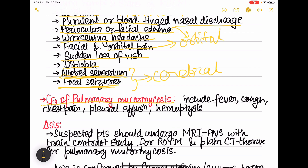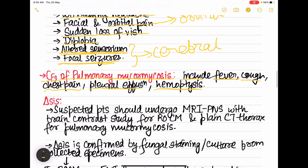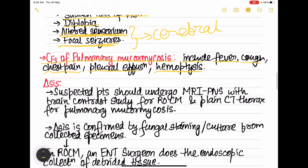The clinical features of pulmonary mucormycosis include fever, cough, chest pain, pleural effusion, and haemoptysis (coughing out blood).